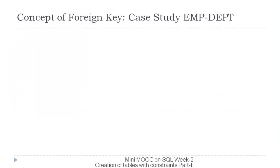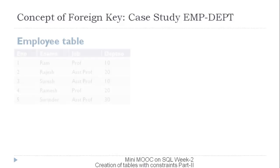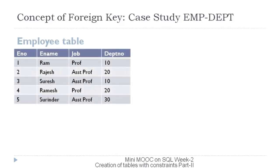Let us understand the concept of foreign key constraint through an employee-department database. We have an employee table with columns: employee number, employee name, job, and department number, and five records have been inserted. Suppose only three departments are allowed — 10, 20, and 30. We cannot apply a check constraint for this because departments can be added or removed in the future. The solution is a foreign key.